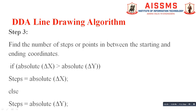Our next step is to find the number of steps or points between the starting and ending coordinates, and for that we apply this condition: if the absolute value of delta x is greater than the absolute value of delta y, then the number of steps equals the absolute value of delta x. If this condition is not true, then the number of steps equals the absolute value of delta y.